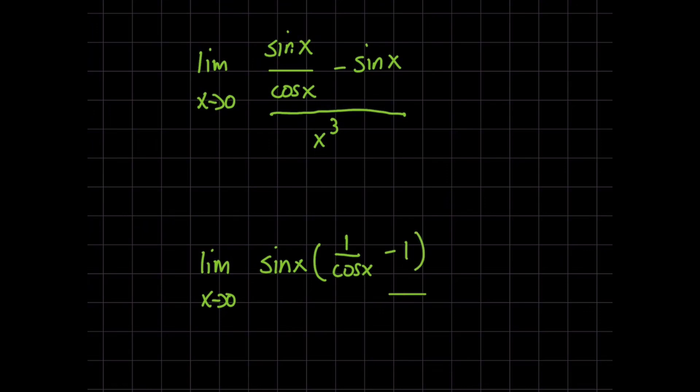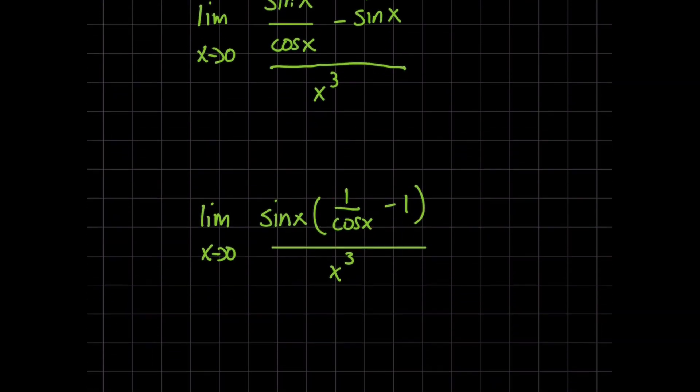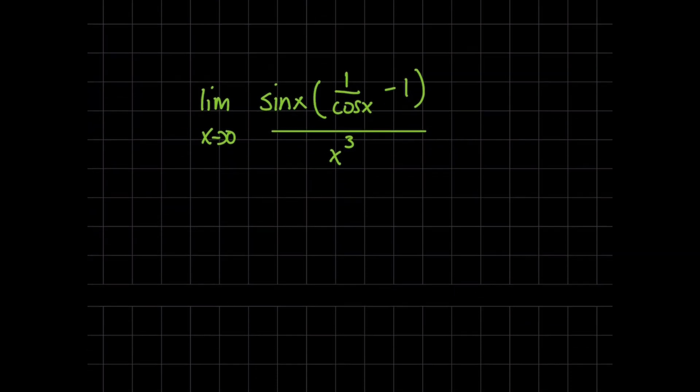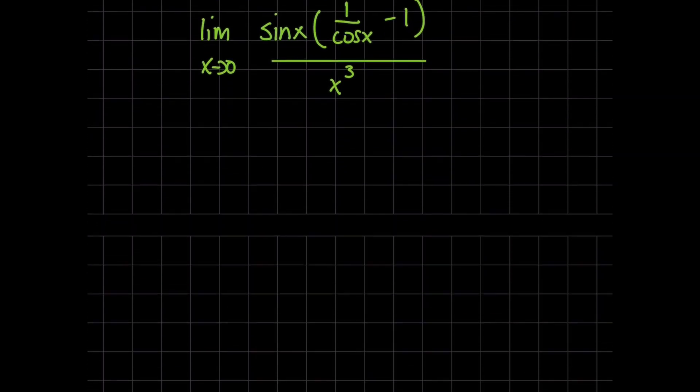So the next logical step here is to say, you know what, I don't like having a fraction on the numerator of this larger fraction. Why don't I combine the denominators of these two terms right here? So for that minus one term, I'm going to multiply cosine of x over cosine of x. And that's going to give me this new limit as x approaches zero of sine of x, and then here we're going to get one minus cosine of x all over cosine of x, and then this will all be divided by x cubed.